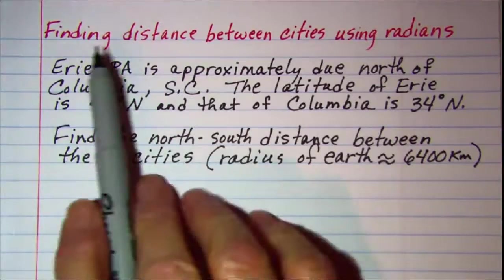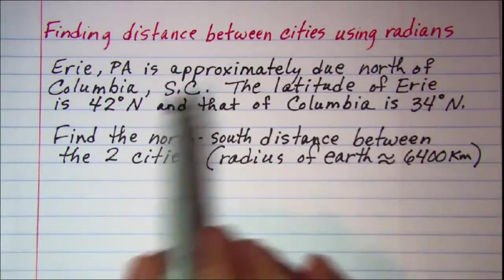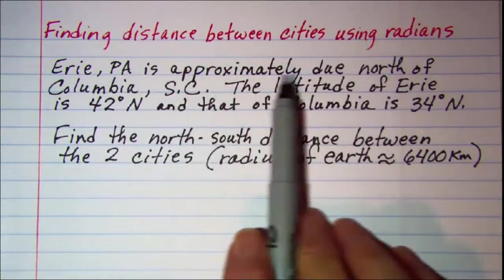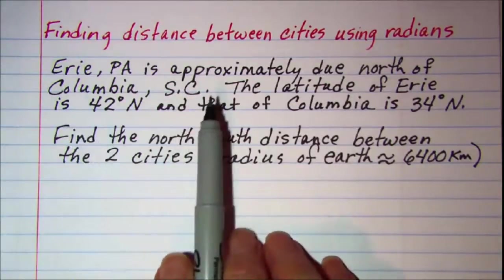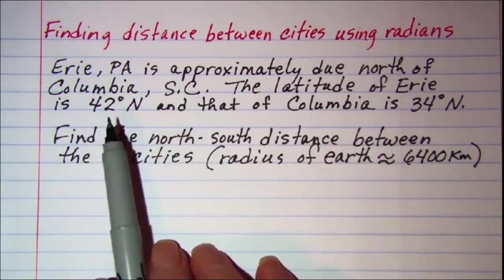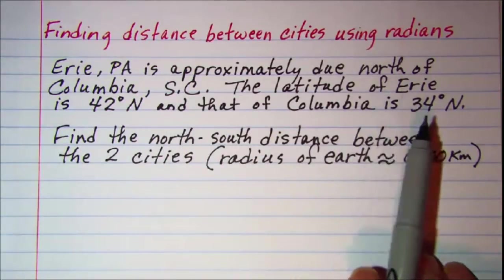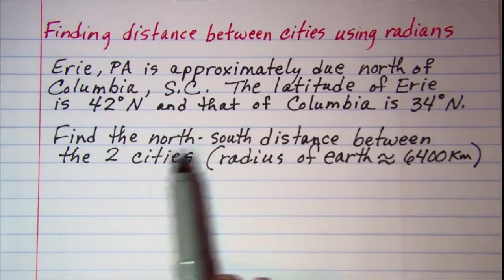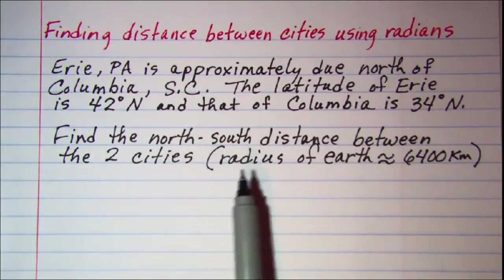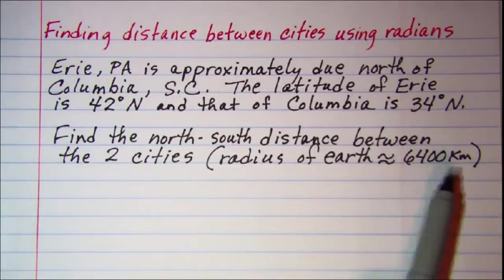In this video, we'll be finding the distance between cities using radians. Our problem is: Erie, Pennsylvania is approximately due north of Columbia, South Carolina. The latitude of Erie is 42 degrees north, and that of Columbia is 34 degrees north. We're asked to find the north-south distance between the two cities, assuming that the radius of the Earth is approximately 6,400 kilometers.